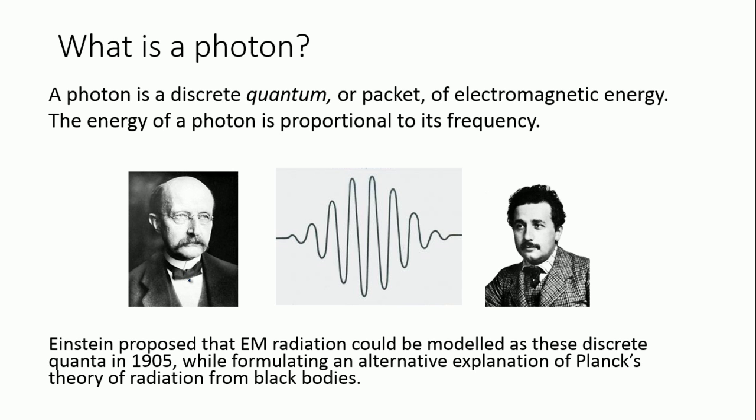Now this was an extremely new idea and it overturned a lot of previous work and a lot of previous thought and the whole thinking about light, in fact. Einstein called these little particles or these packets of electromagnetic energy, he called them quanta, which is the plural of quantum. And this is where the word quantum mechanics came from.